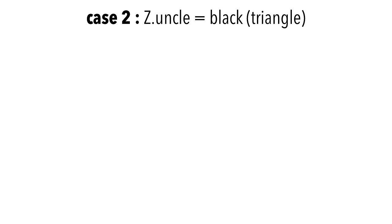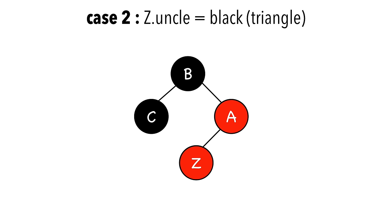Case 2 is when Z's uncle is black, with triangle as the identifier. Let's say this is our graph. C is black and is Z's uncle. This is what I mean by triangle. Z, Z's parent, and Z's grandparent form a triangle. This is because Z is a left child and its parent A is a right child.